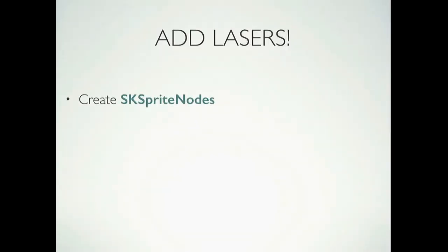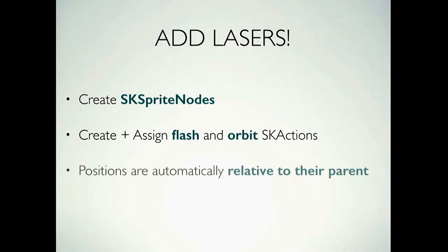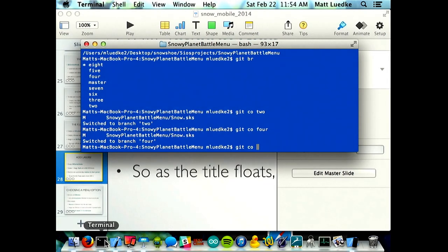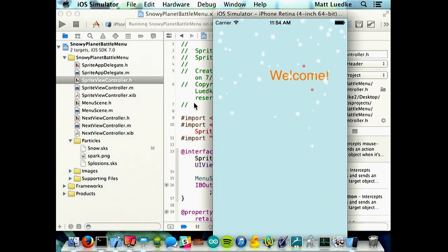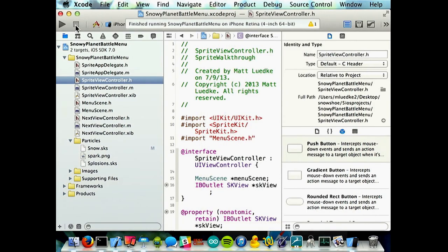Now we add lasers — also sprite nodes. Just like snowflakes are white dots, these are red dots because lasers are red. You create them and assign flash and orbit SKActions — they flash and orbit the title. They are children of the title node, so as the title moves and swings around, the orbit swings with it and they continue orbiting smoothly. In the demo you can see them moving with the title, blinking as little red dots.